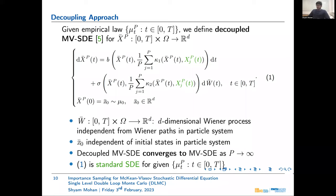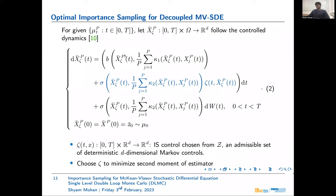The decoupled McKean-Vlasov SDE converges to the original McKean-Vlasov SDE as the number of particles tends to infinity. Crucially, decoupling ensures that this SDE is a standard SDE for a given empirical law, and we can then use standard stochastic optimal control to define an optimal change of measure for this decoupled SDE.